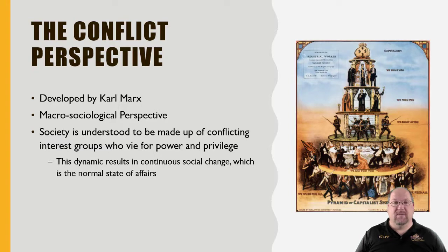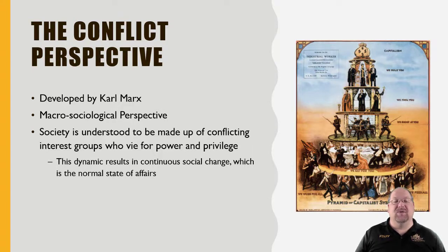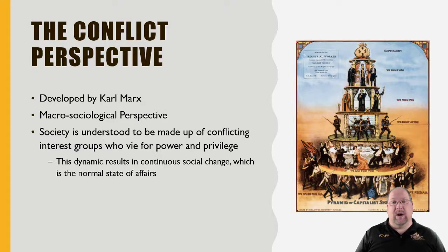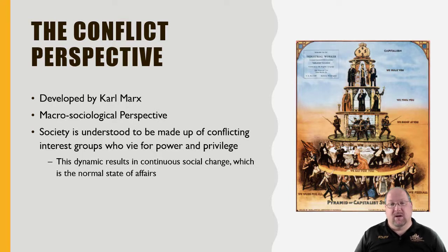As discussed in the last lesson, we talked about the proletariat and the bourgeoisie — one group of power looking to control another. This dynamic results in continuous social change, which is its normal state. There must be conflict for things to get done. We see a lot of this in recent political life — between people of different political beliefs, Republican or Democrat, for example. The rich versus the poor, the upper class versus the lower class, those that have and those that don't.